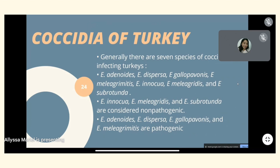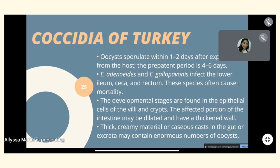For coccidia of turkeys, there are generally seven species: E. adenoides, E. dispersa, E. gallopavonis, E. meleagrimitis, E. innocua, E. meleagridis, and E. subrotunda. Three of these seven are non-pathogenic, while four — E. adenoides, E. dispersa, E. gallopavonis, and E. meleagrimitis — are pathogenic. Oocysts sporulate within one to two days after expulsion from the host, and the prepatent period is four to six days.